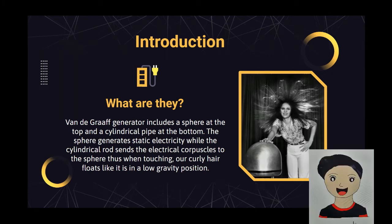Introduction: What is the Van de Graaff generator? It includes a sphere at the top and a cylindrical pipe at the bottom. The sphere generates static electricity, while the cylindrical rod sends the electrical charges to the sphere. Thus, when touching it, our hair floats like it is in a low gravity position.